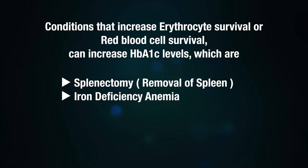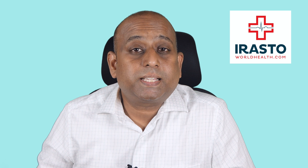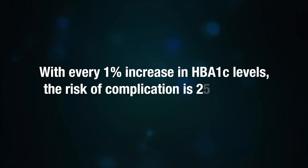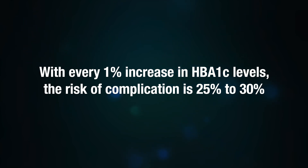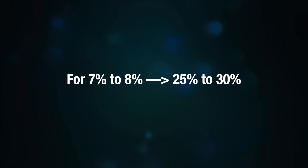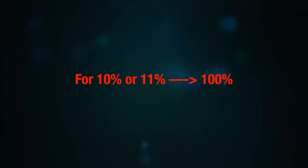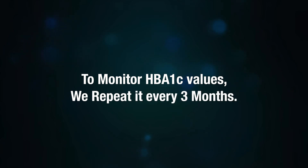Conditions that increase erythrocyte survival can increase HbA1c levels — these include splenectomy and iron deficiency anemia. HbA1c is directly related to risks for diabetic complications. Complications were noted when HbA1c levels were above 7%. With every 1% increase in HbA1c, the risk of complication rises: at 7%–8% the risk is 25–30%; at 8%–9% it is 50–60%; and at 10%–11% it is 100%.